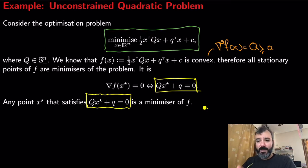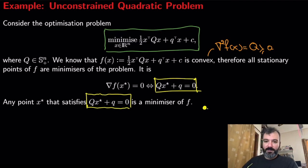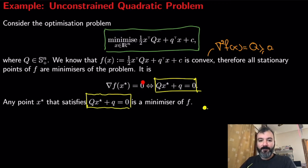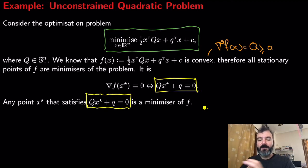So we have a convex function — that's perfect. Therefore, since it is also a smooth function, we can determine a stationary point. We can take the gradient and set it equal to zero, and if we can solve this equation we can determine a minimizer.